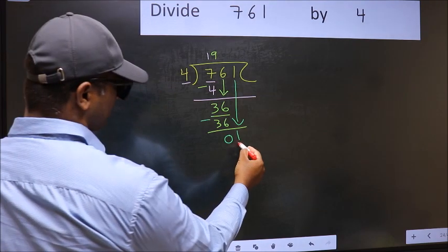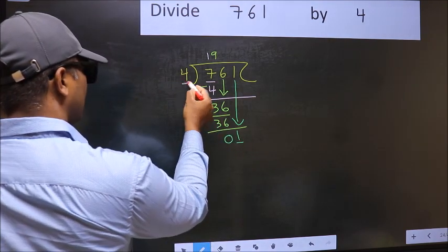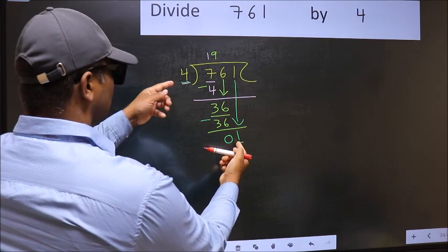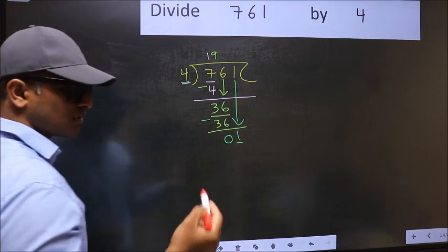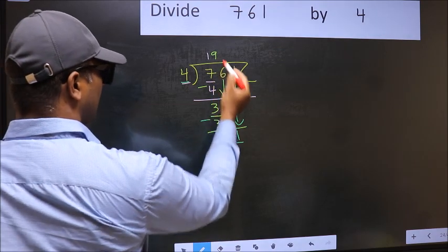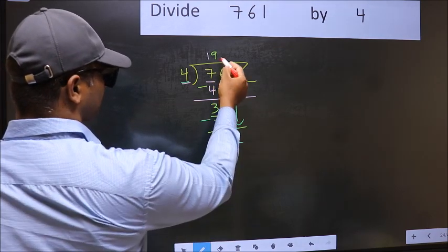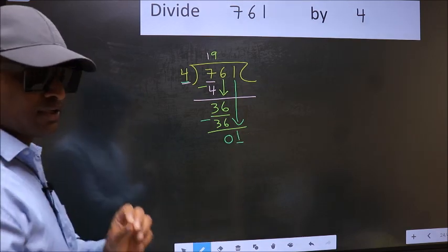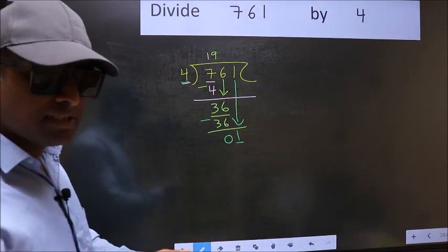Here we have 1. And here 4. 1 is smaller than 4. So what many do is, they directly put dot and take 0. Which is wrong.